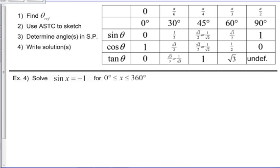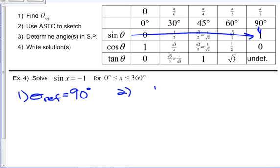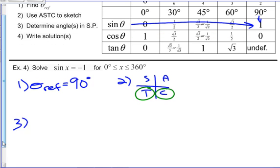Let's do one more. Sine is negative one. So theta ref, we're looking for where sine is one. Don't care about the positive or negative. Sine is one over here at 90 degrees. We need sine to be negative, that means we're in quadrants three and four. Now sometimes people find it tricky with 90 degrees, but it really just means the same thing that it's meant with every other angle.